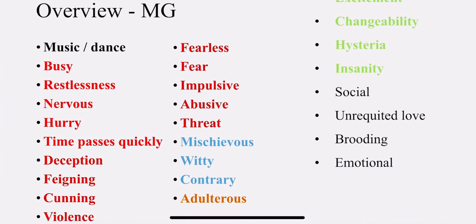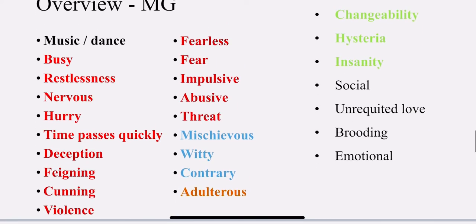Sexual desires: they are adulterous, with increased desire — increased sexual desires, nymphomania. Now an overview of the mental generals of the spider group: music, dance; they are busy, restless, nervous, hurried; time passes quickly; deception — they fake sickness; they are cunning; violence — they tear clothes; fearlessness in children; fear of death; impulsive; abusive, threatening — they threaten to kill people; mischievous and witty in a funny way; contradiction aggravates complaints; adulterous with increased sexual desires; changeability of moods; hysteria; when nobody is present, no hysteria; insanity; socially they express their emotions; unrequited love — they feel neglected; brooding which affects health and makes them weak and emotional.